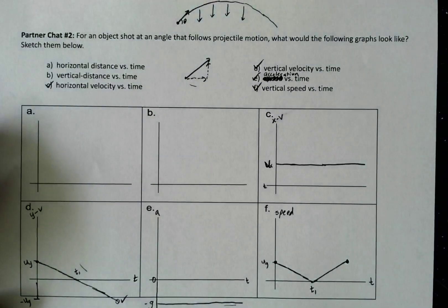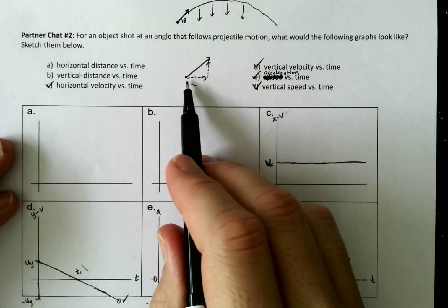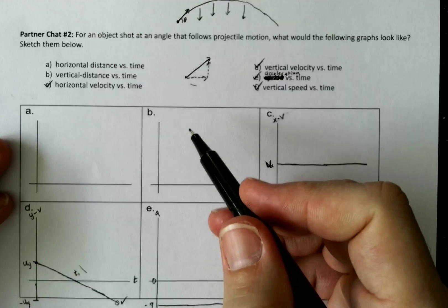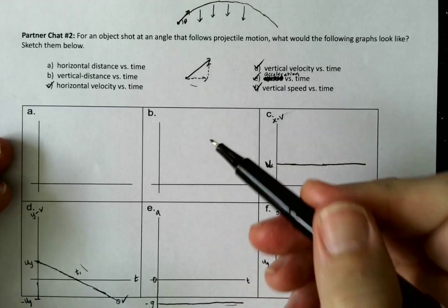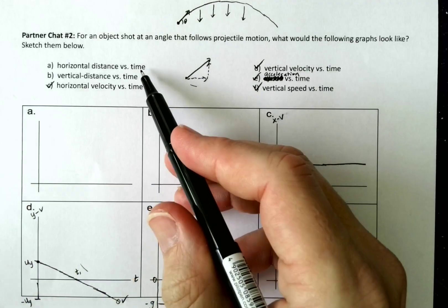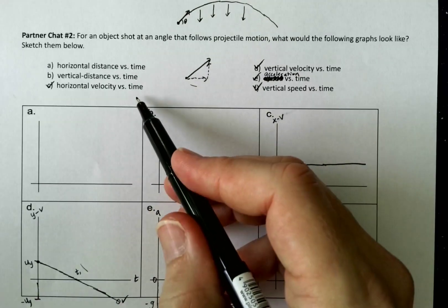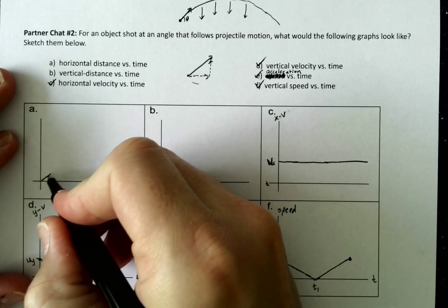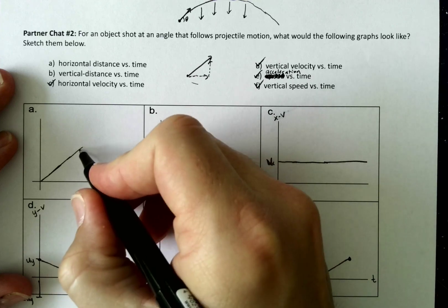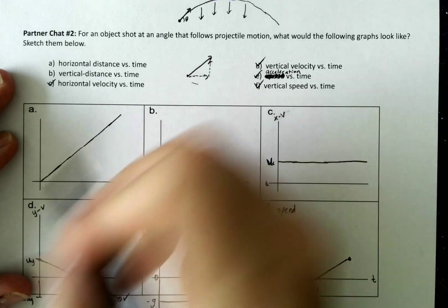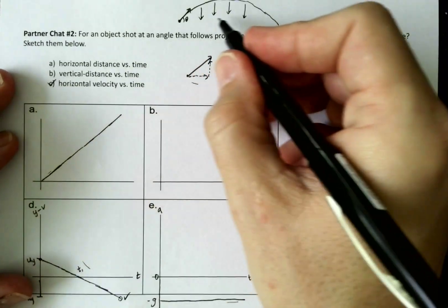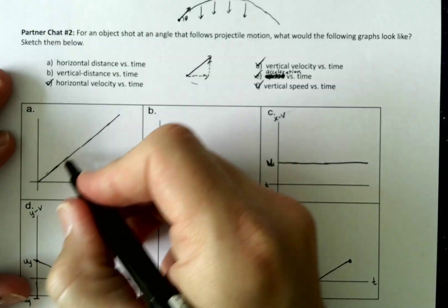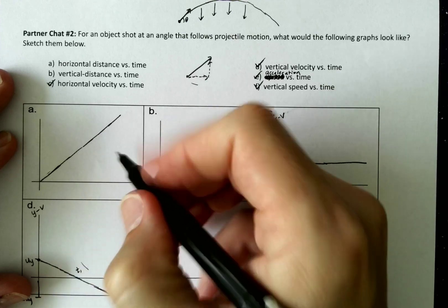Okay. Let's look at the distances now. So the horizontal distance, recognize the horizontal velocity was constant, which means that the horizontal distance needs to have a constant slope. Remember that the slope of distance versus time is velocity. So if that was constant, then I should end up with a constant horizontal here. And that should make sense because as long as the ball is flying, the object is flying, it will continue to increase its horizontal distance away.